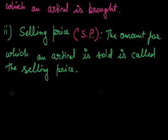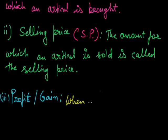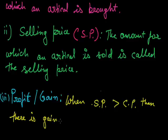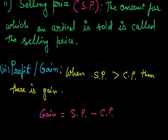Now we come to the main topic: profit, or we can say gain. When will we have gain or profit? Whenever the selling price is greater than the cost price — that is, the price at which we sold the article is more than what we paid — then there is a gain. To find the gain, we subtract the cost price from the selling price.